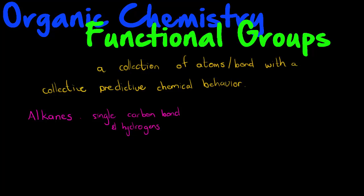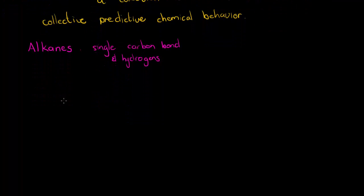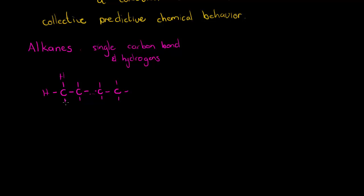So basically if I were to show you the general form, we would have a carbon connected to a carbon, connected to a carbon, connected to a carbon. Each carbon has four valence electrons, and these additional ones will all be connected to hydrogens. This is the general form for alkanes.